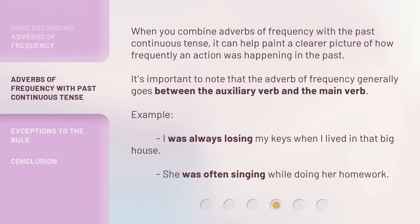When you combine adverbs of frequency with the past continuous tense, it can help paint a clearer picture of how frequently an action was happening in the past. It's important to note that the adverb of frequency generally goes between the auxiliary verb and the main verb. For example: 'I was always losing my keys when I lived in that big house.' 'She was often singing while doing her homework.'